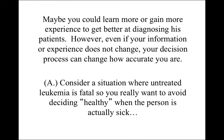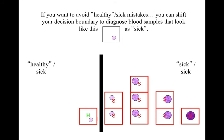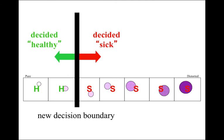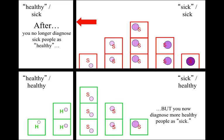You could learn more or gain more experience to get better at diagnosing patients. However, if your information or experience doesn't change, your decision process can change how accurate you are. Consider a situation where untreated leukemia is fatal — you really want to avoid deciding healthy when the person is actually sick. So we shift the decision boundary to diagnose blood samples that look borderline as sick. You've now diagnosed this previously-healthy-labeled person as sick so they get treatment. After this shift, you no longer diagnose sick people as healthy — all sick people are getting the treatment they need. But you now diagnose more healthy people as sick, so these people are receiving unnecessary treatment for leukemia that they don't actually have. That's the trade-off of shifting your decision criterion.